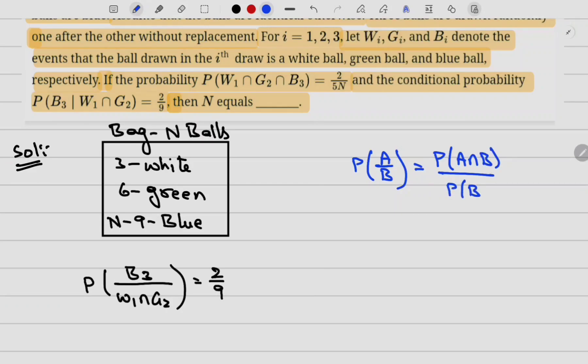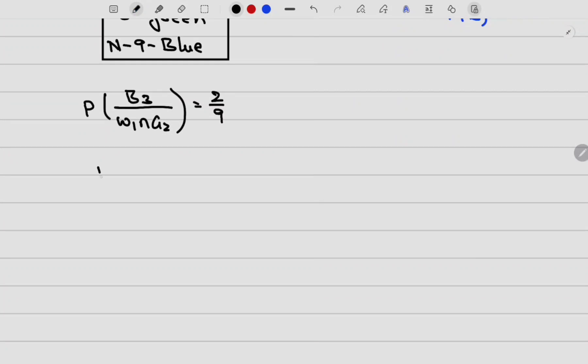Now let me apply this formula. P(B3 ∩ W1 ∩ G2) divided by probability of W1 ∩ G2, which is equal to 2/9.